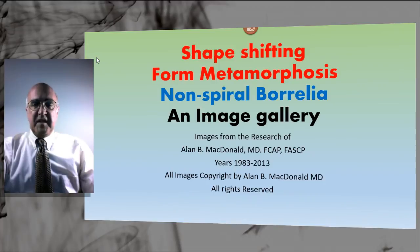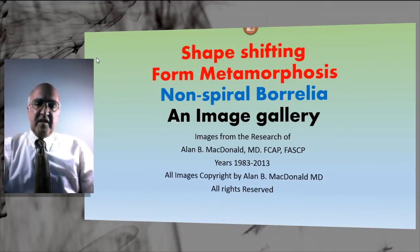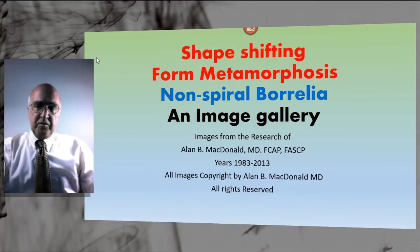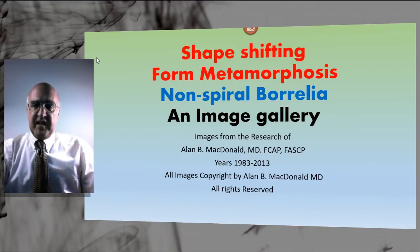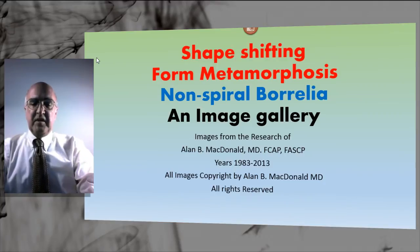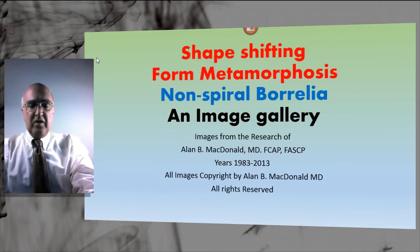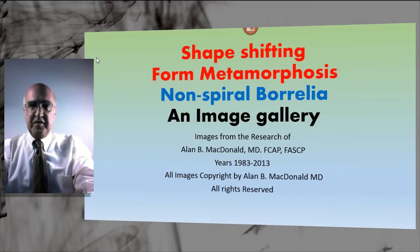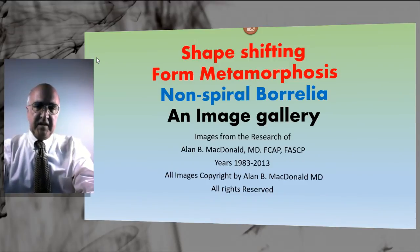Each of the groups can manifest spirochetes with a spiral form representing a corkscrew, or can present with forms that resemble rounded bodies or little knot-like granular bodies, or even minute bleb-like bodies which are invisible with the ordinary microscope.